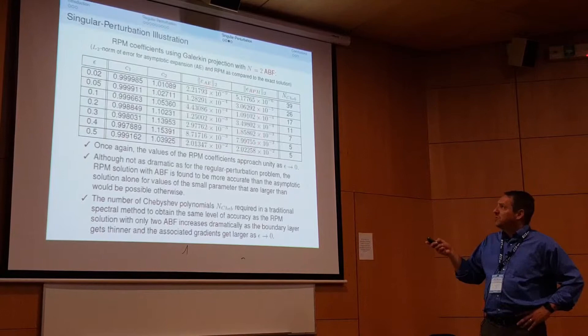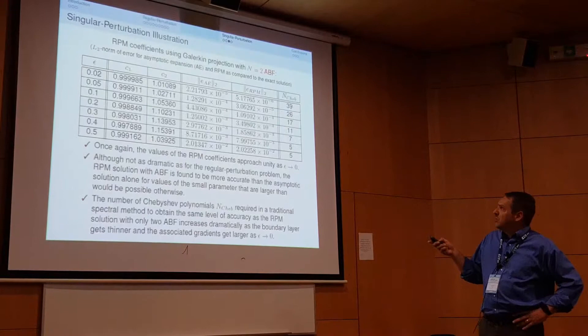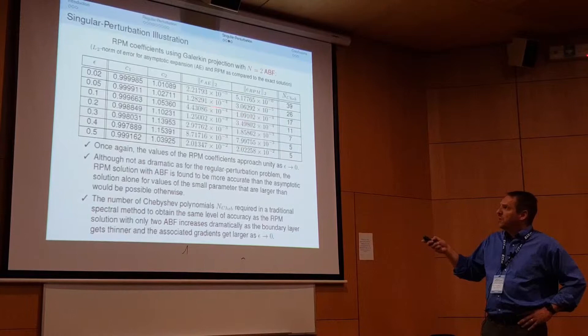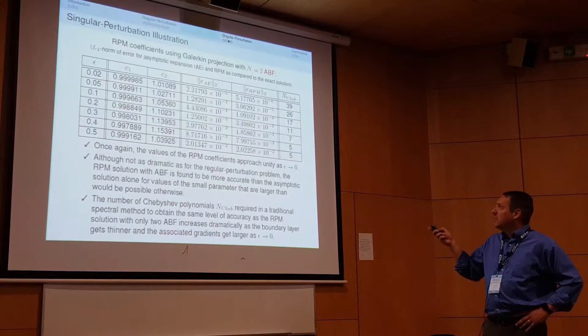With increasing epsilon: the L2 norm of error for the asymptotic expansion by itself, and for the RPM solution via Galerkin projection, are compared. As epsilon decreases, the coefficients approach one as expected. The RPM solution is better than the asymptotic expansion alone, up to a certain epsilon value. I'll show on the next slide why there is a limit to how large epsilon can get.